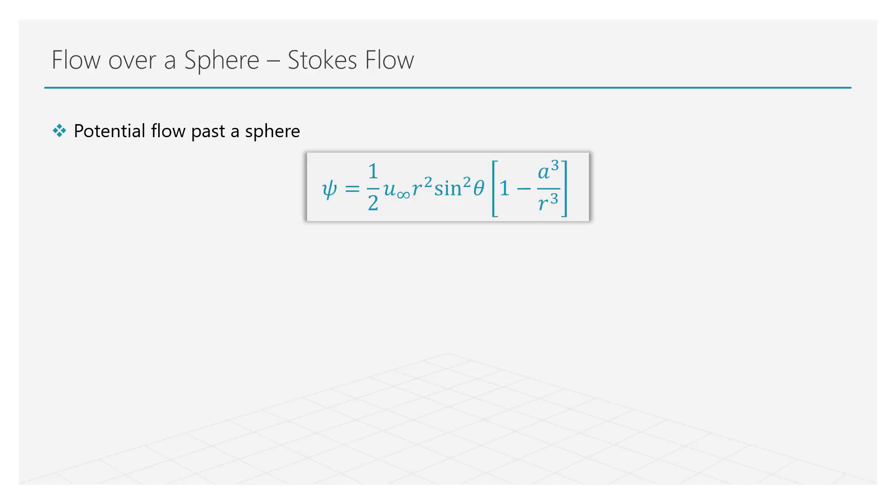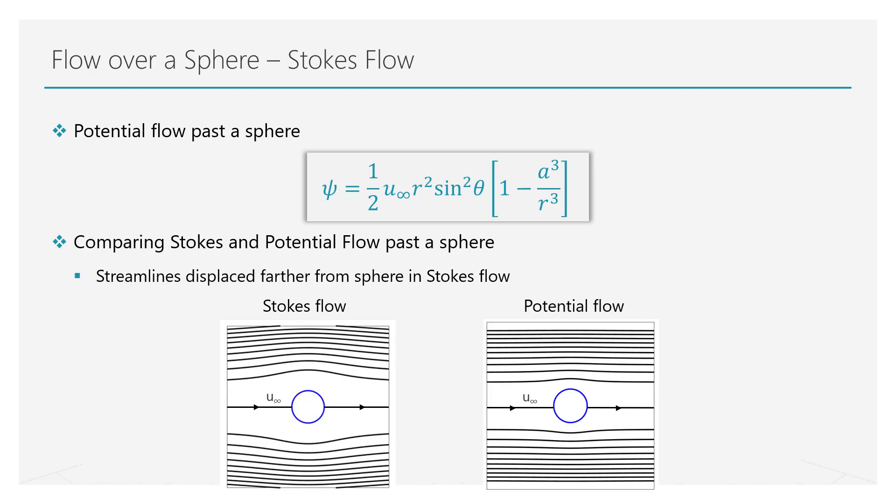The analytical solution for a potential flow past a sphere is shown here. We won't be digging into it in this course, but rather we will just use the solution for comparison purposes. Let us now look at the streamlines for this flow. It is quite easy to notice the similarity in the streamline profiles between this flow and the stokes flow. The only minor difference is that the streamlines for the stokes flow are displaced farther away from the sphere.